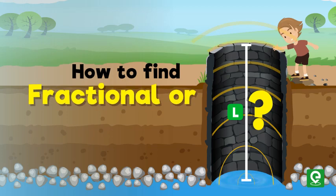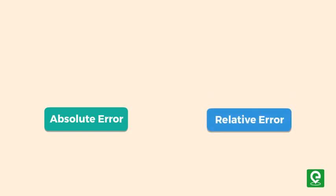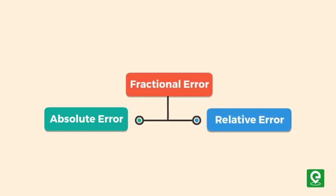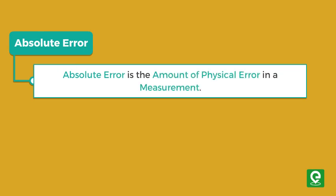How to find fractional or relative error in change in length. Absolute and relative error are two types of error with which every experimental scientist should be familiar with. Absolute error is the amount of physical error in a measurement.